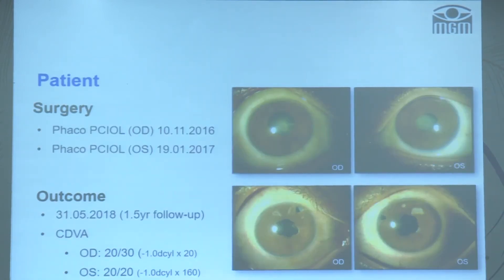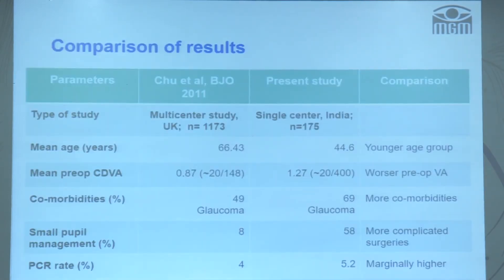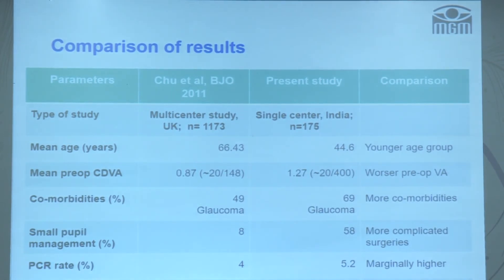Returning to our patient as one of the better cases — at one and five years of follow-up, his corrected distance visual acuity in both eyes was 20/30 and 20/20, and his eye is quiet. Comparing our series with a Western series, our patients were younger, had worse preoperative visual acuity, more comorbidities, and more complicated surgeries. However, we achieved marginally improved visual acuity. Most prognostic factors, including preoperative visual acuity, remain important for achieving a good outcome.